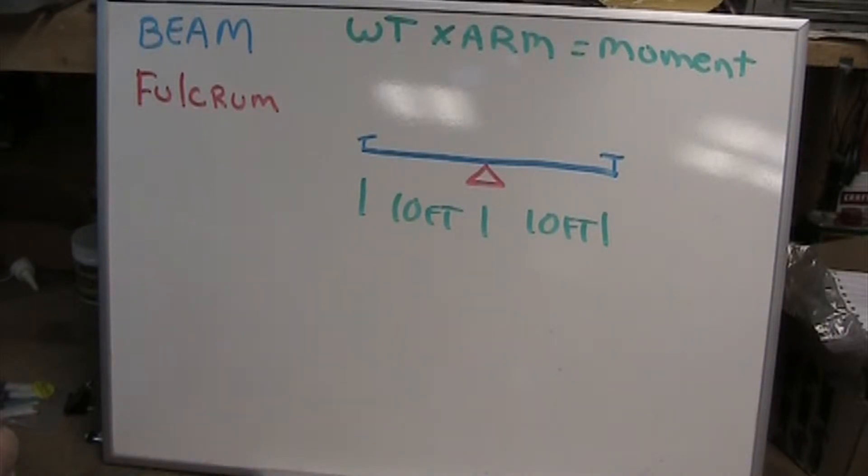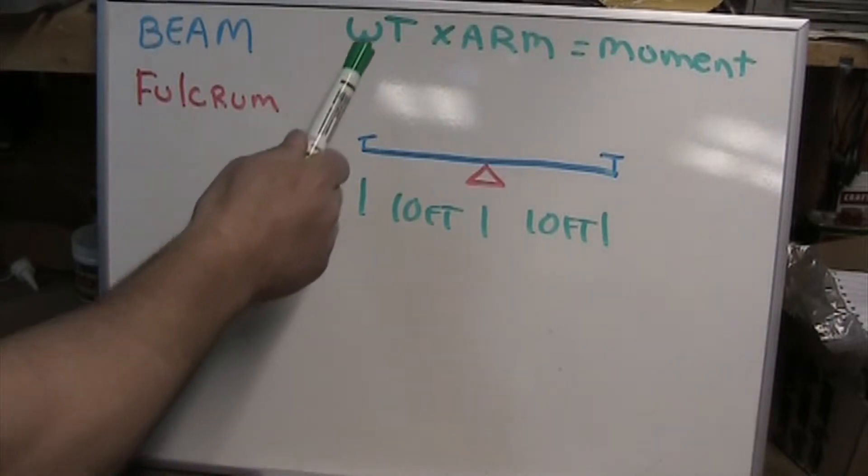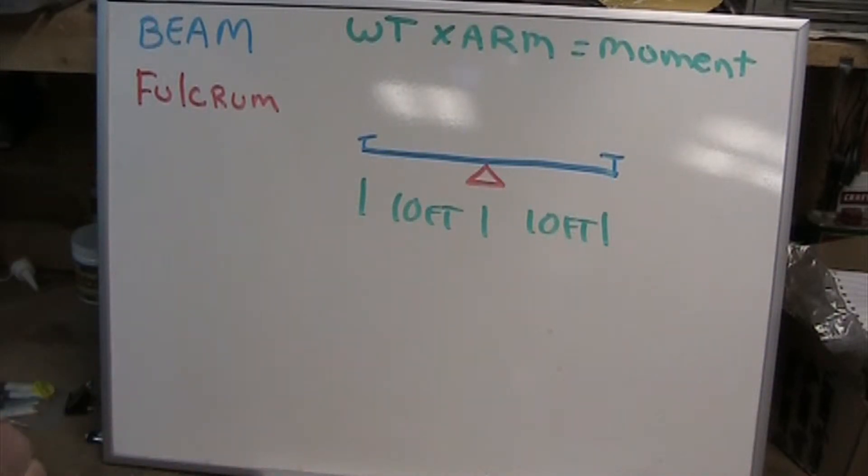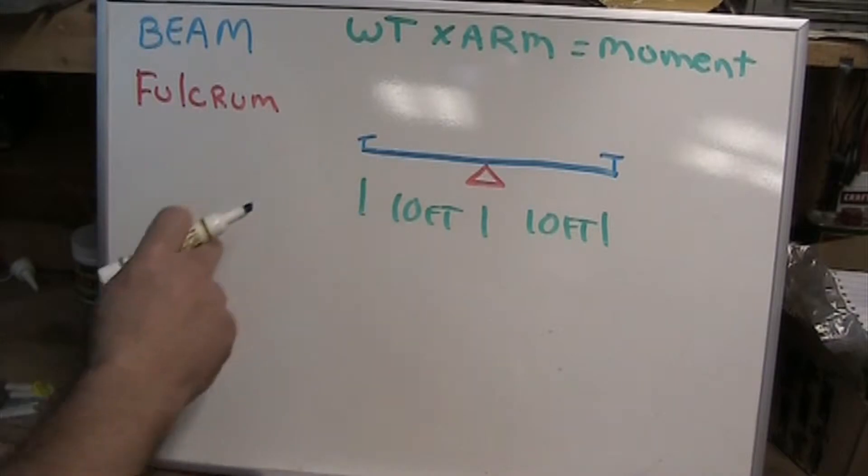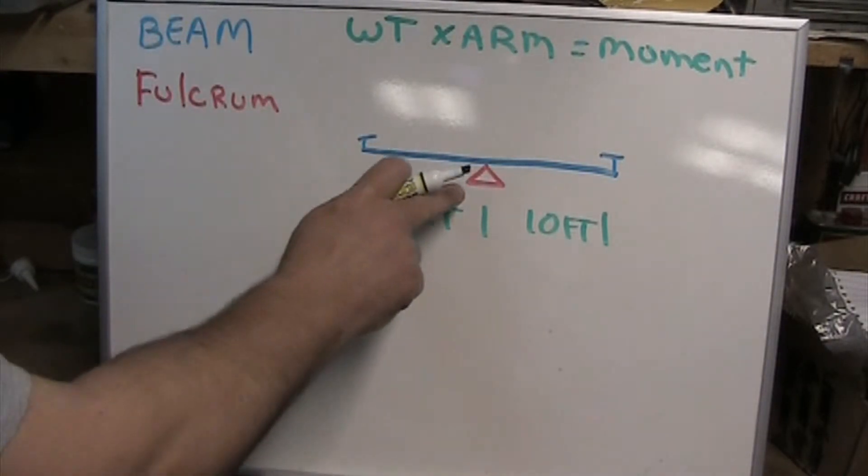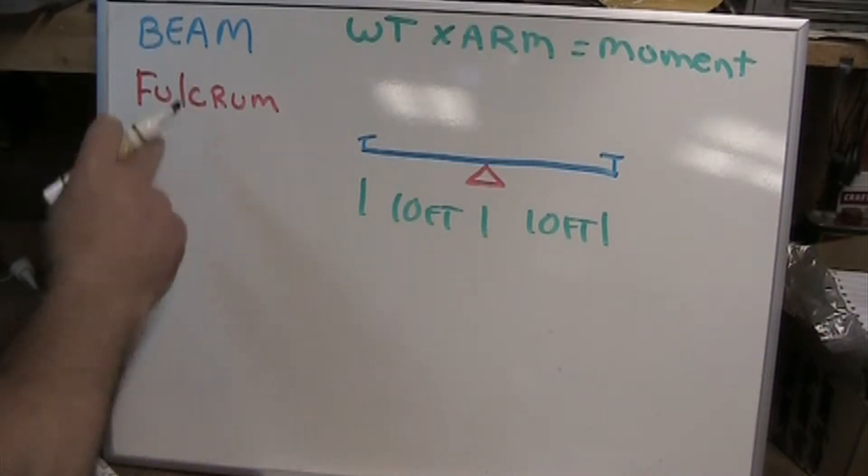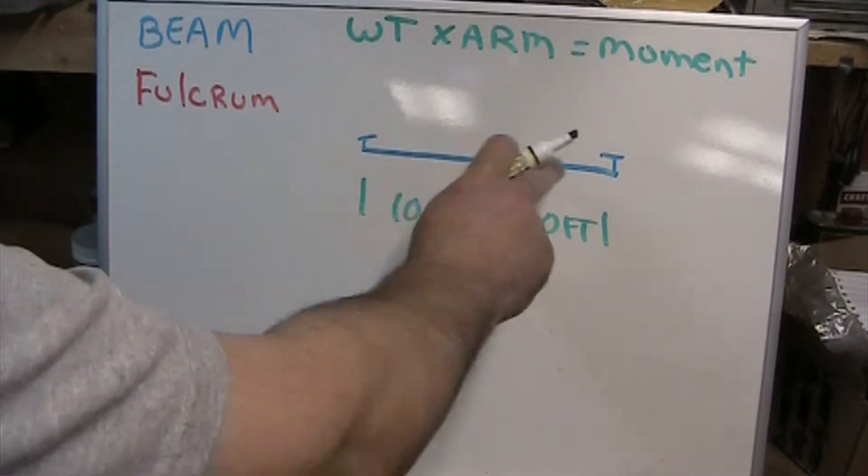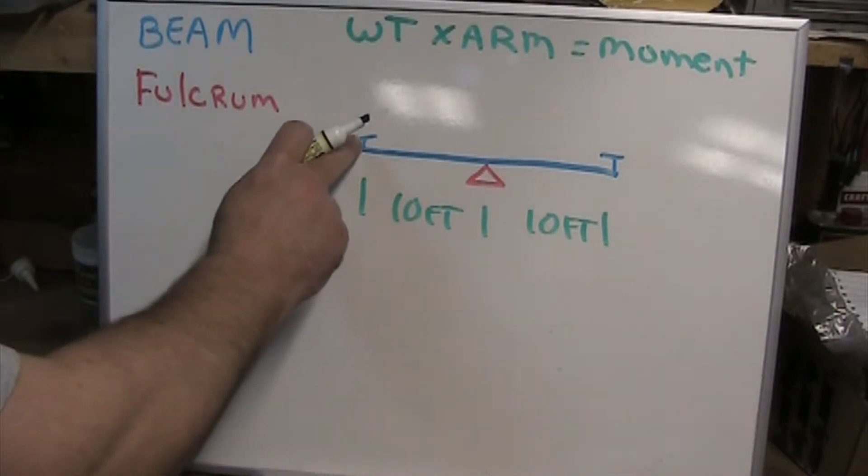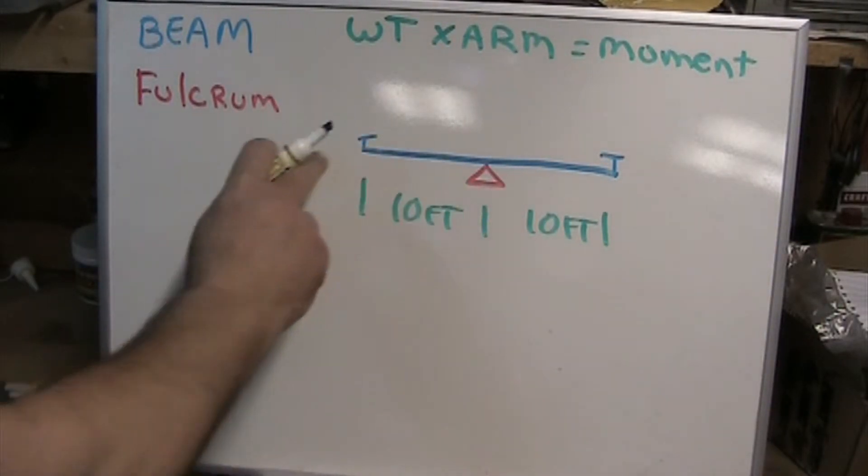We've got just one equation to deal with here: weight times arm equals the moment. I've got the beam in blue, the fulcrum in red, which denotes the center of the beam.